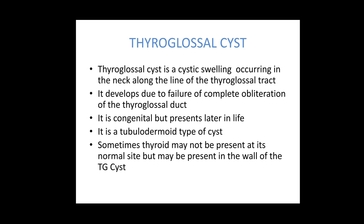It is a congenital anomaly but usually presents later in life, and is a tubulodermoid type of congenital cyst. Sometimes the thyroid may not be present at its normal site. In such a case, the wall of the thyroglossal cyst will contain thyroid tissue. If you remove the cyst, you may have effectively done a thyroidectomy, so this must be searched for prior to planning surgery.